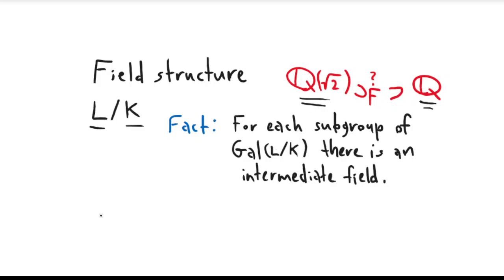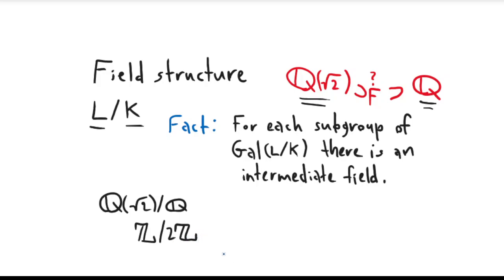In this case, the Galois group of Q adjoined square root of two over Q is Z mod 2Z, and there are only two subgroups of Z mod 2Z: Z mod 2Z itself, and the subgroup containing only the identity. So that tells you there are only two intermediate fields — exactly the ones I wrote. This is called the Fundamental Theorem of Galois Theory, or FTGT for short.